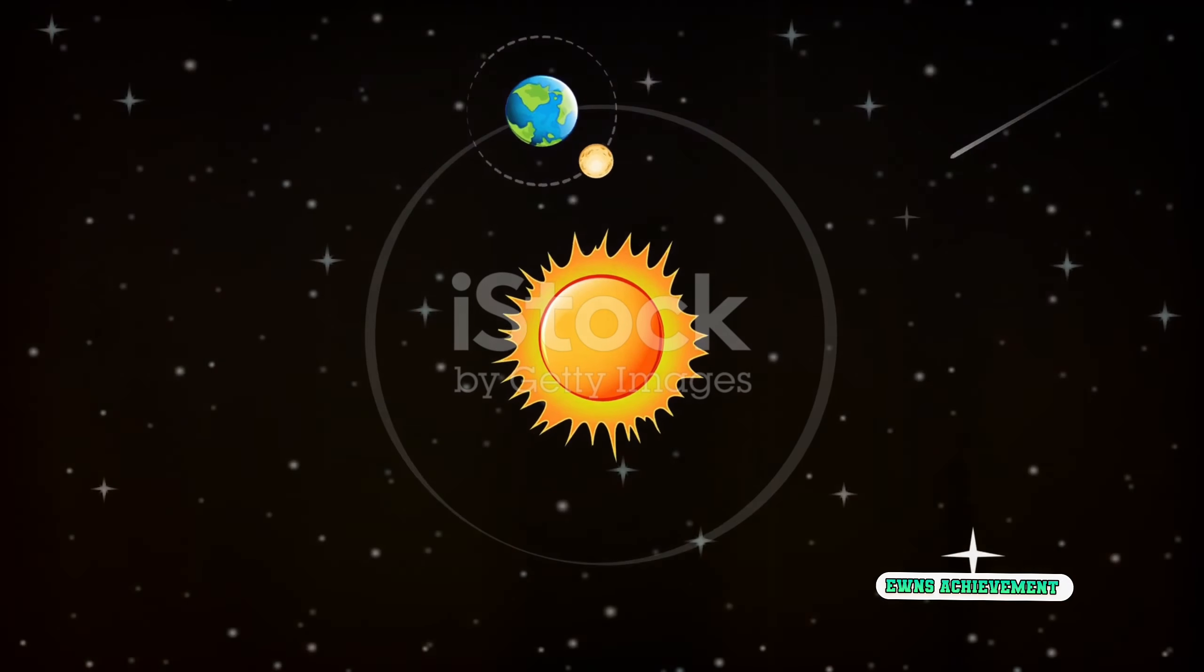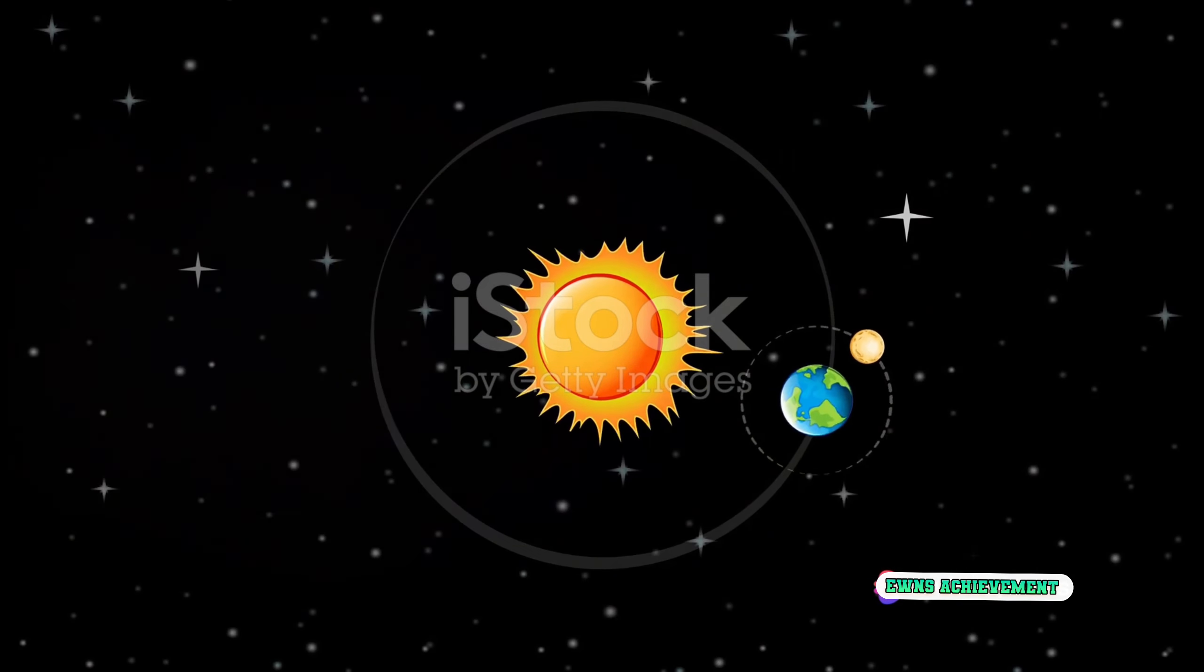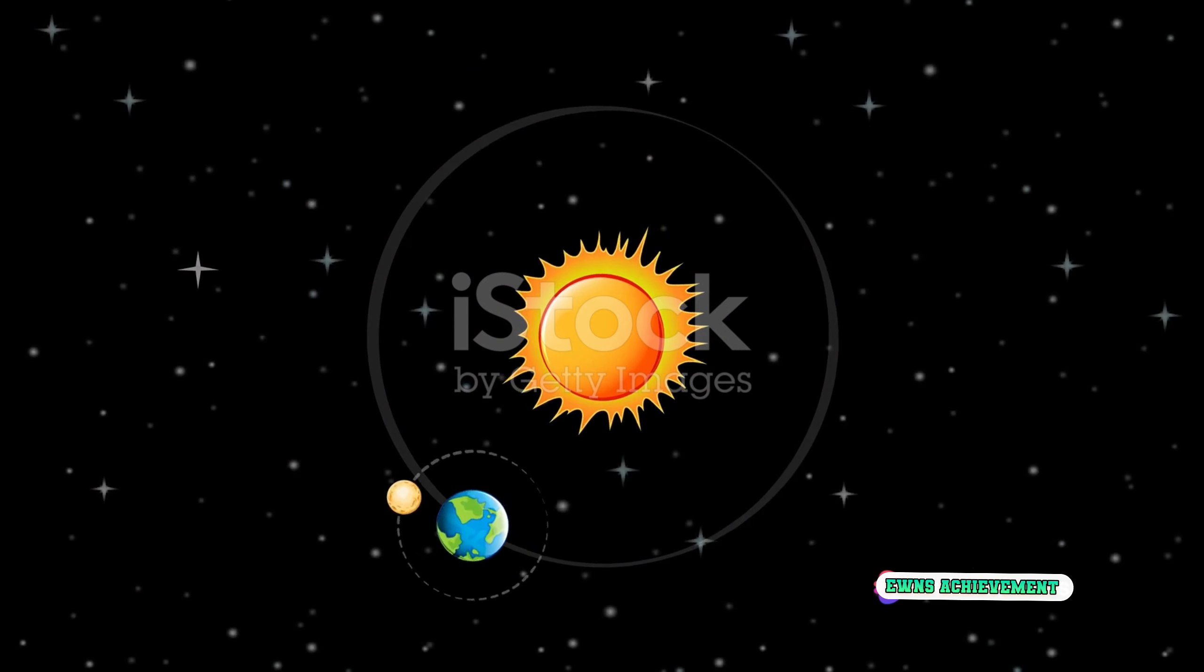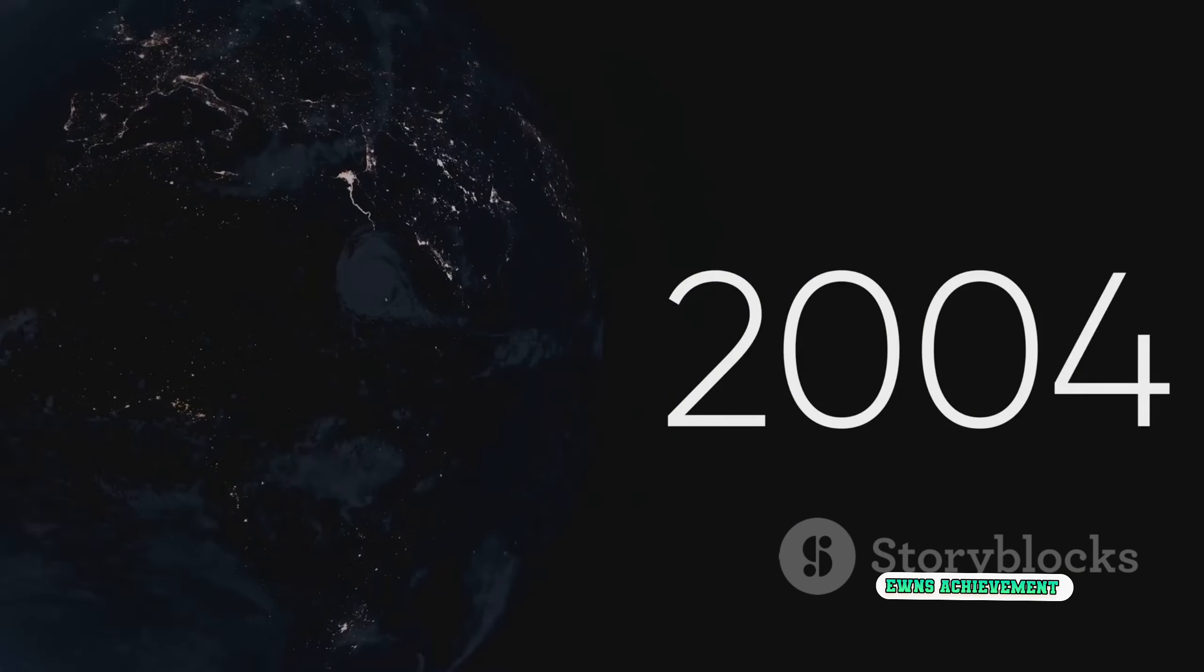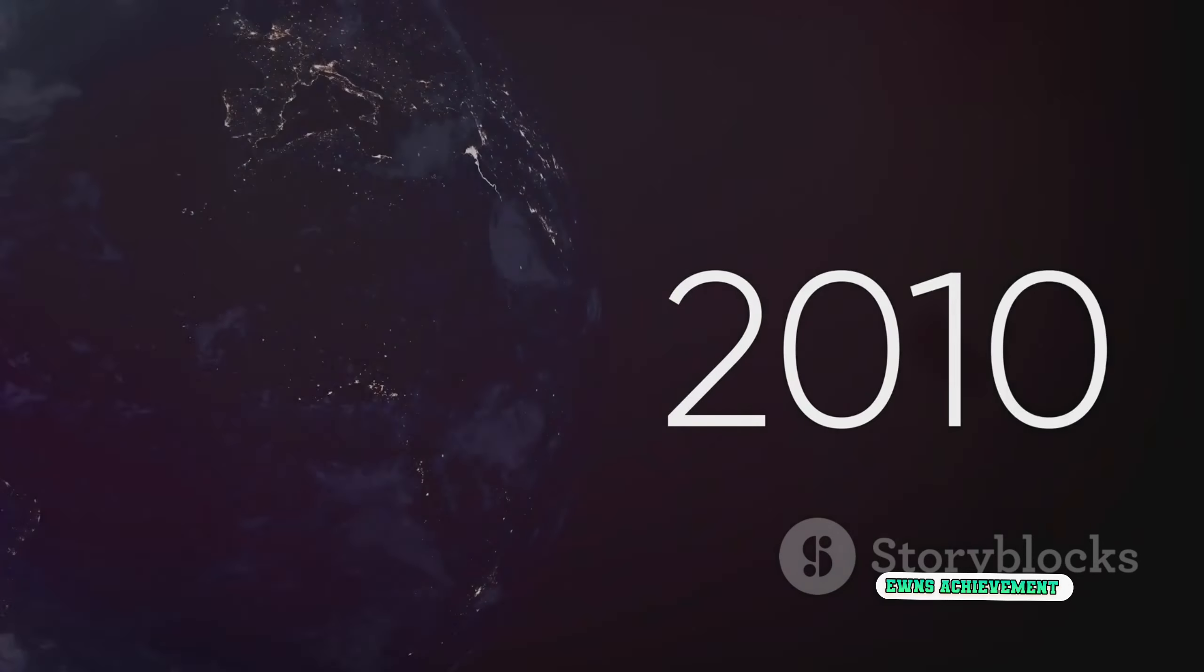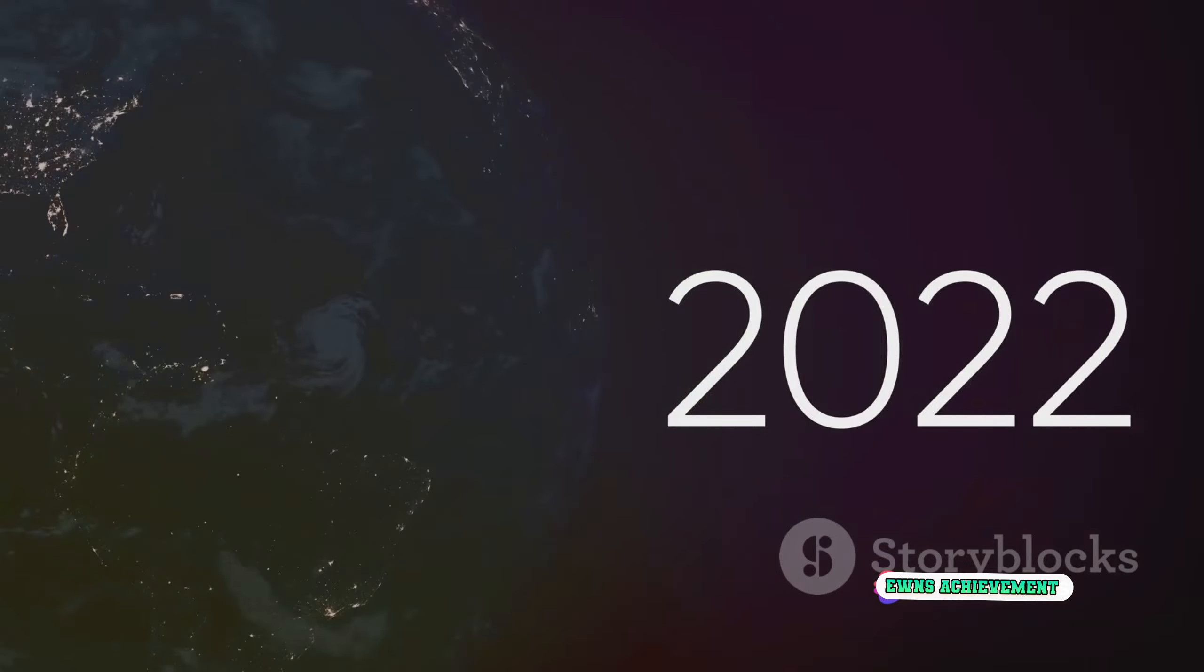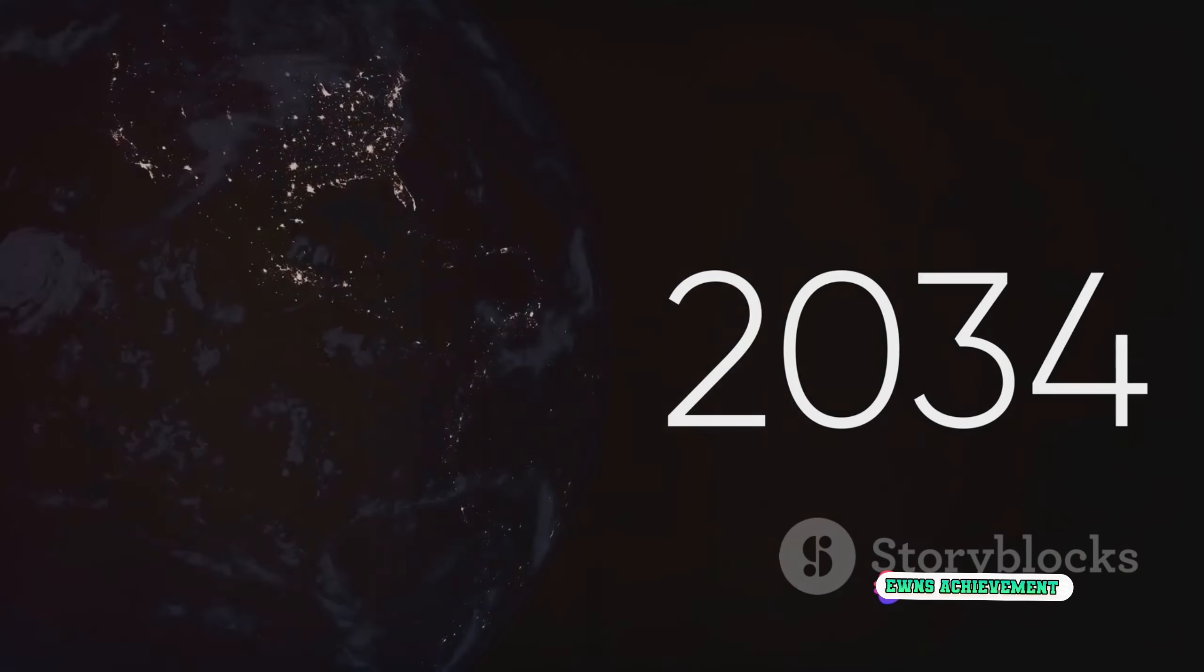In simple terms, Earth's revolution is its journey around the sun. Now, remember when you were a kid and you'd spin around until you were dizzy and then try to walk in a straight line? Well, luckily for us, Earth is a bit more coordinated. It takes about 365 and a quarter days to complete one full revolution around the sun. That's right, our year is actually a little bit longer than we usually count, and that's why we have a leap year every four years to keep our calendars in sync.